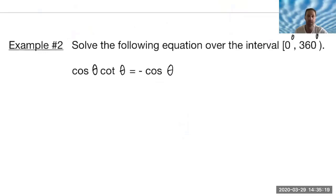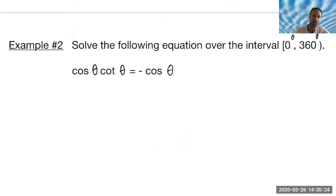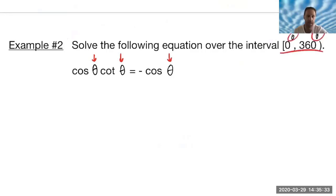The second example says to solve the following equation over the same interval. Usually when theta is our variable, it's going to be in degrees. And if they would have replaced the thetas with x's, then that would have meant zero to two pi instead.